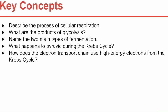Let's go to key concepts. The key concepts for Chapter 9: Describe the process of cellular respiration. What are the products of glycolysis? Name the two main types of fermentation. What happens to pyruvic acid during the Krebs cycle? And how does the electron transport chain use high-energy electrons from the Krebs cycle? All right, that's it for Chapter 9.